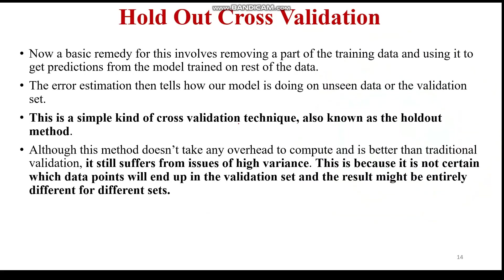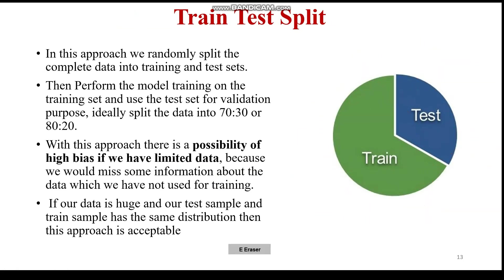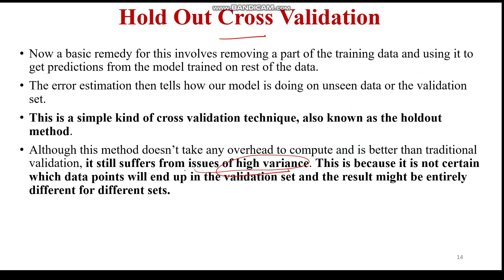Next is holdout cross-validation. A basic remedy involves removing a part of training data and using it to get predictions for the rest of the data. The error estimation here tells how the model is doing on the unseen cross-validation set. This simple kind of cross-validation technique, also known as the holdout method, doesn't take any overhead to compute and is better than simple validation, but it still suffers from the issue of high variance. This high variance occurs because it is not certain which data points will end up in the validation set, and the results might be entirely different across different sets.